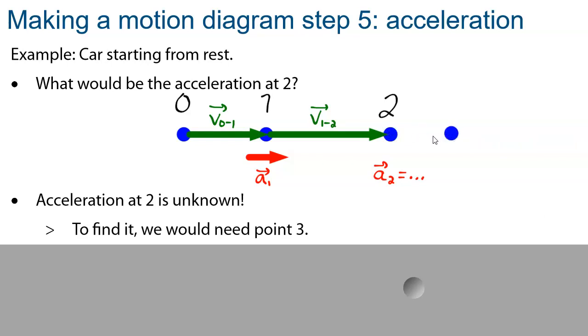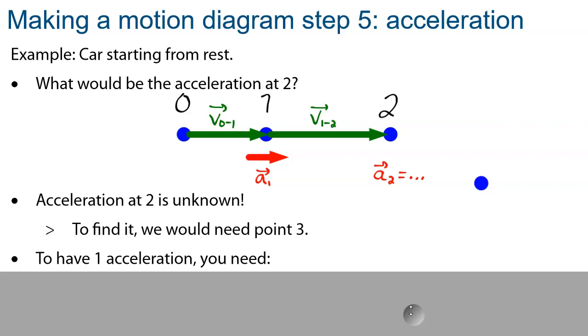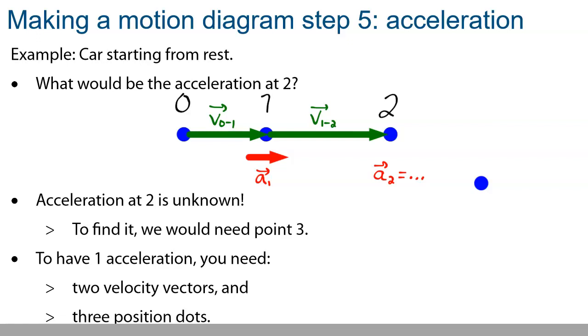If dot three was here, then clearly the velocity would be reducing, shrinking. So the acceleration would be something that corresponds to slowing down, so an acceleration against the velocity. However, if the dot was here, then the velocity would be increasing, so the acceleration would be with the motion, to the right. So depending on where is that third point, we'll have different values for the acceleration. So if you want to find one acceleration, you need to have the velocity both before and after, and to get this, you actually need three position dots - the one where you're going to find the acceleration, the one before and the one after.